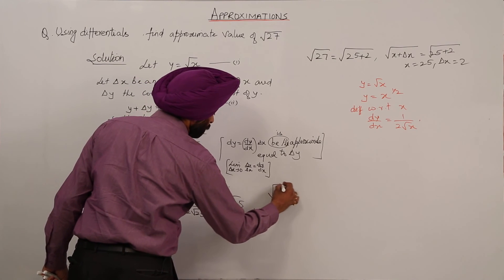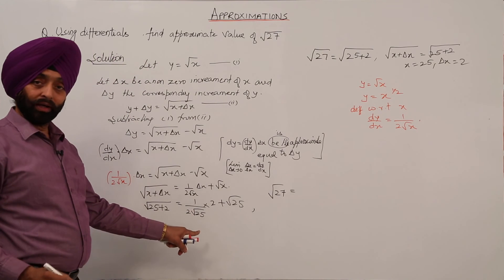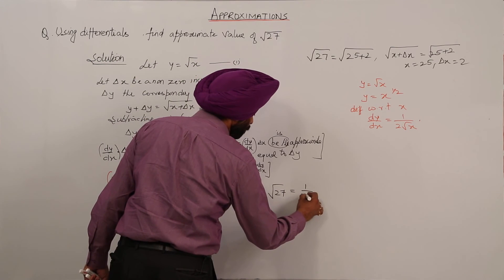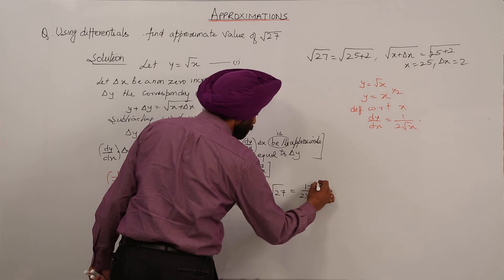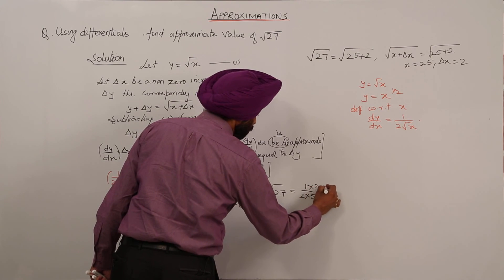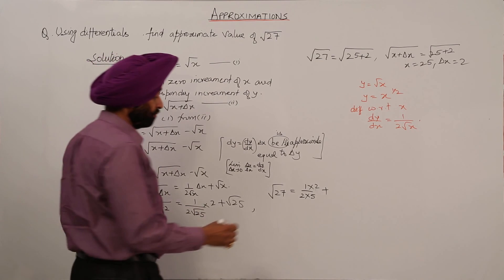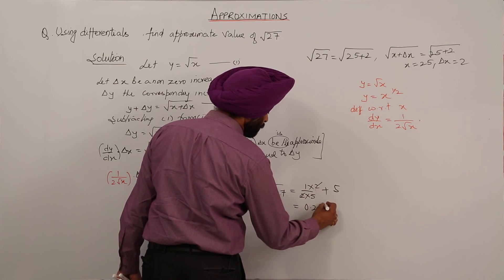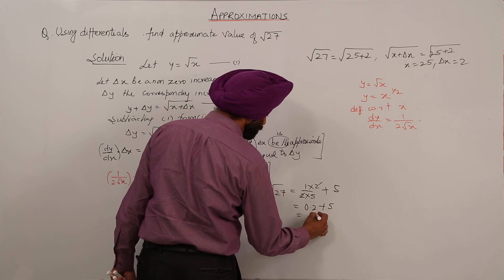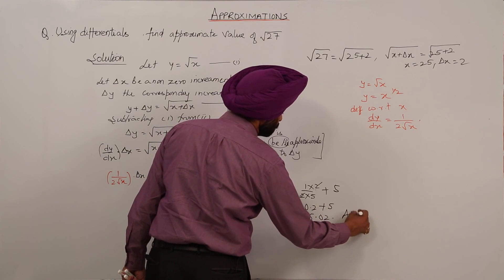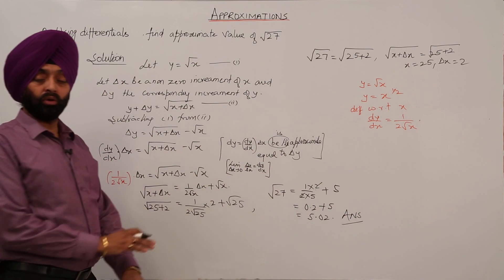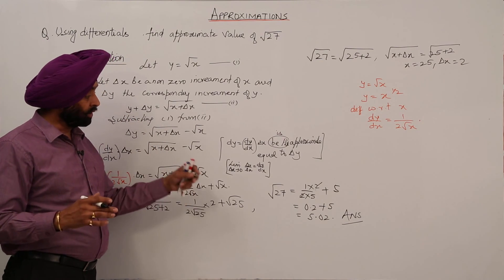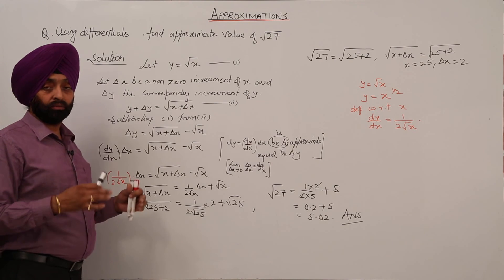So square root of 27 equals 1 upon 10 times 2 plus 5. Here this simplifies: 1/5 is 0.2, plus 5 gives 5.2. This is the answer. With simple calculations, we have found how to solve the question for square root of 27 using differentials.